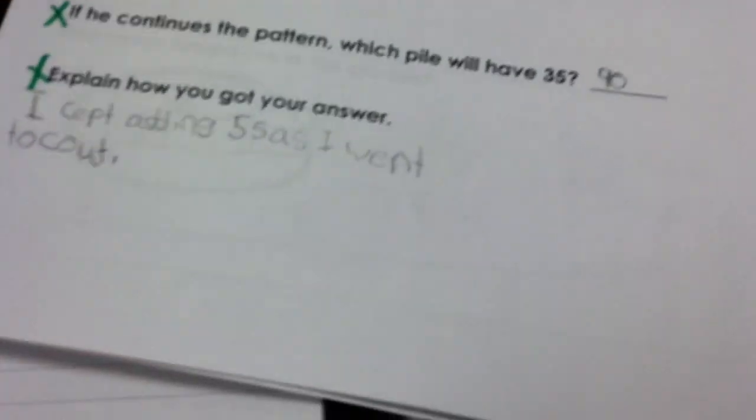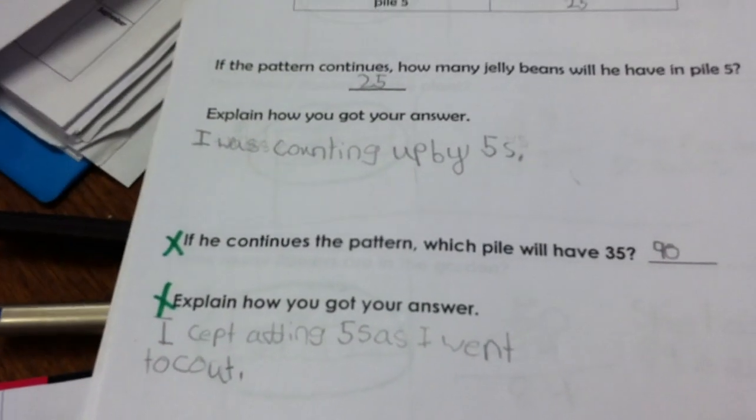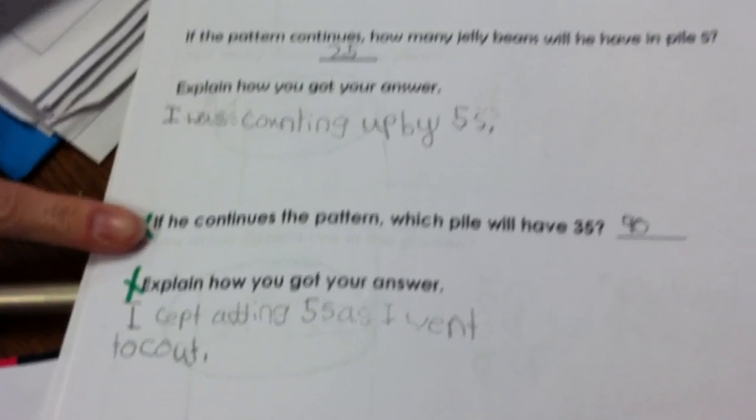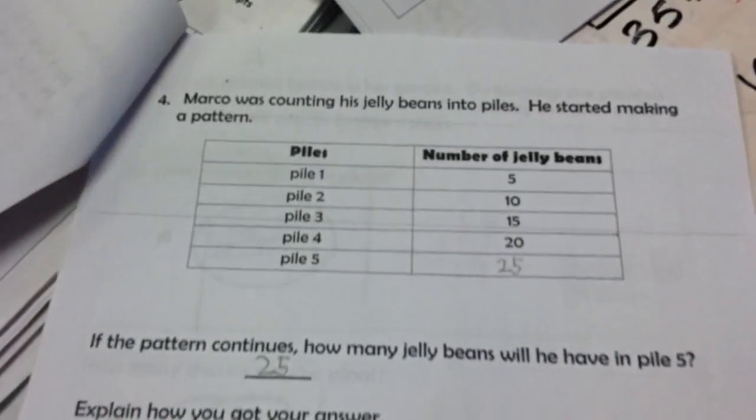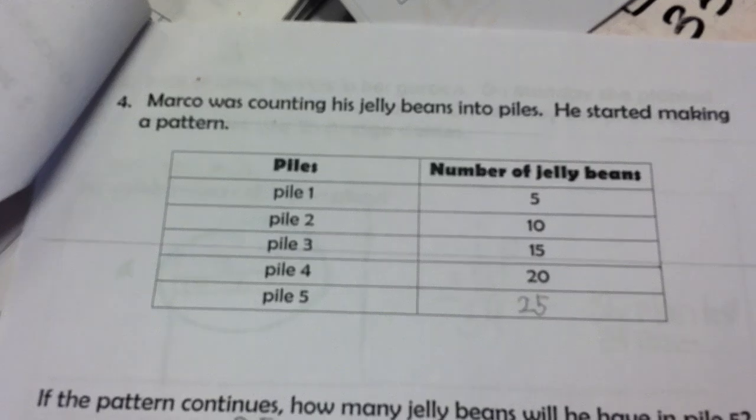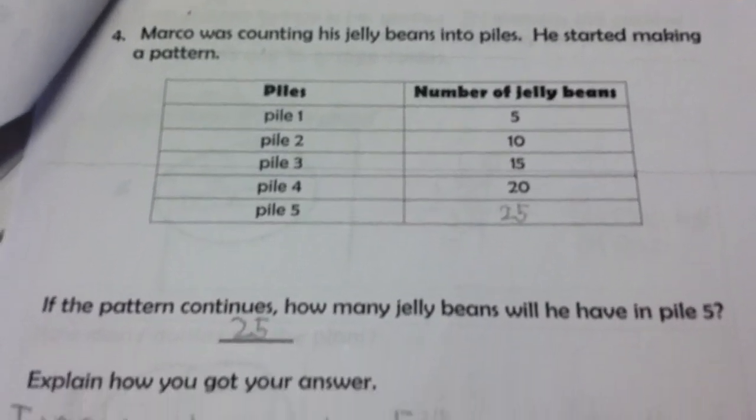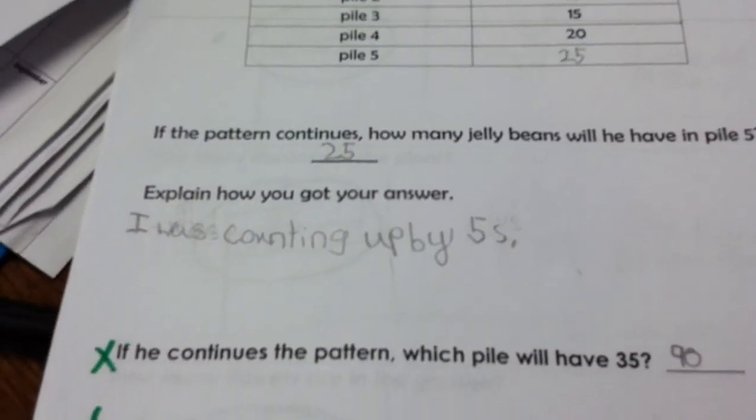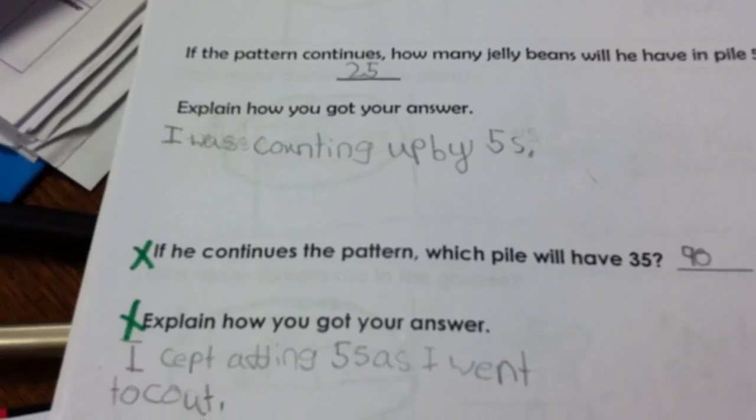And then this one she did struggle with. But her explanation, she knew she was counting by fives. She just couldn't go on fast. So in this case, I didn't show you the chart. Here's Marco and he's counting jelly beans. And there's the pattern. And she knew to count up by fives.